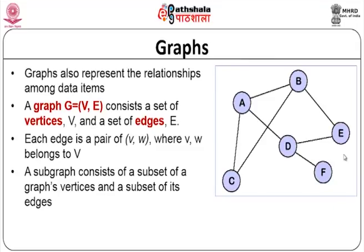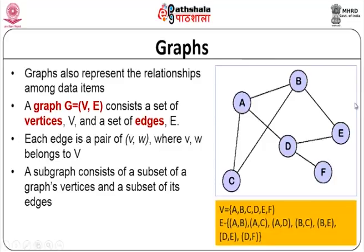Here is an example of a graph with 6 vertices: A, B, C, D, E, F. The edges are A-B, A-C, A-D, B-C, B-E, D-E, and D-F as already discussed.